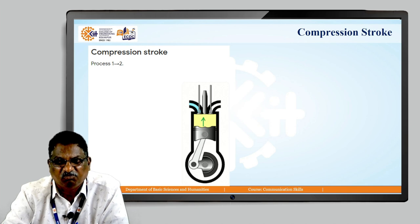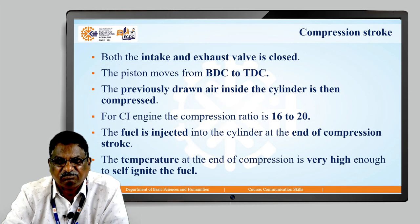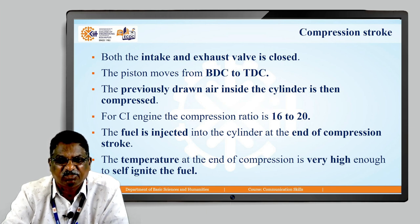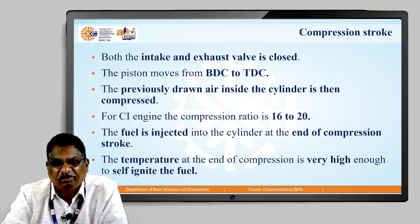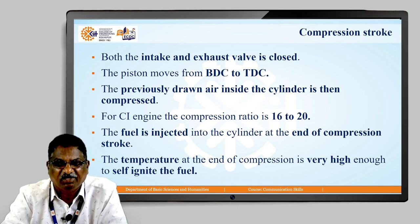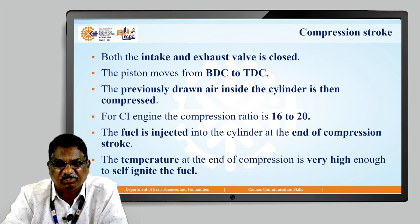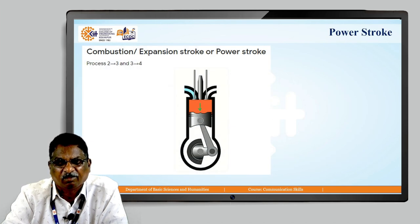Once the air is taken inside the cylinder, the inlet valve is closed completely. The piston moves from BDC to TDC — this is process 1 to 2 from the PV diagram. Both intake and exhaust valves are closed. The previously drawn air is then compressed. For CI engines, the compression ratio is from 16 to 20. The fuel is injected into the cylinder at the end of the compression stroke. The temperature at the end of compression is very high — high enough to self-ignite the fuel.